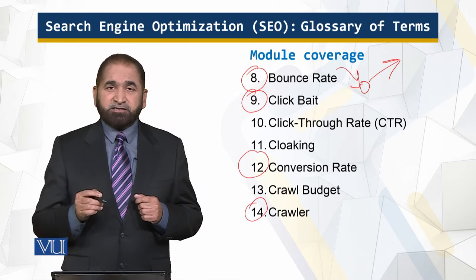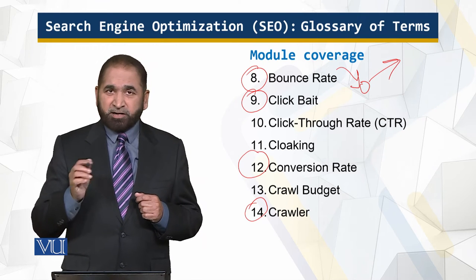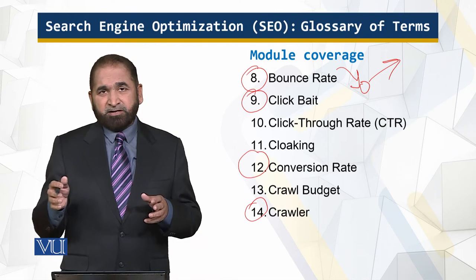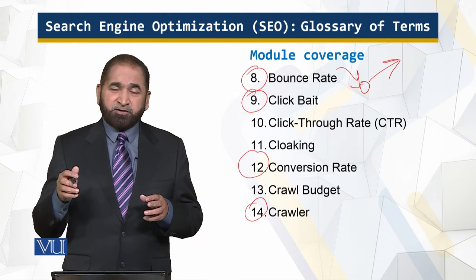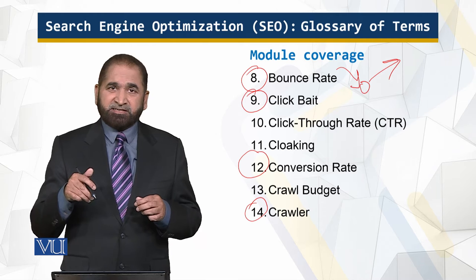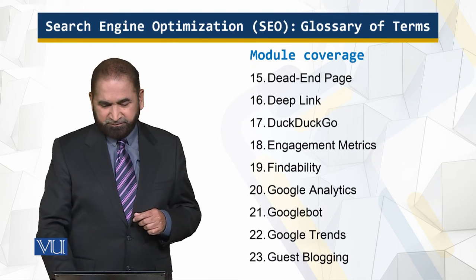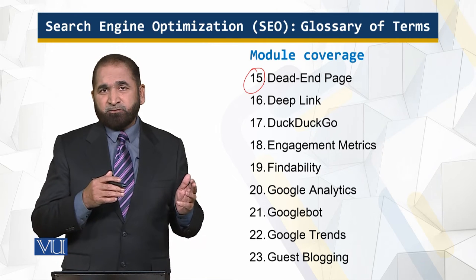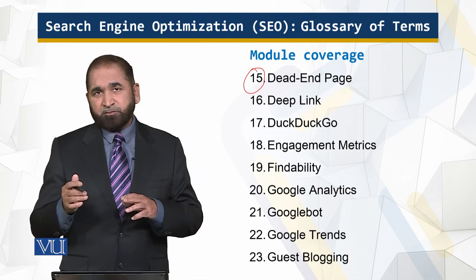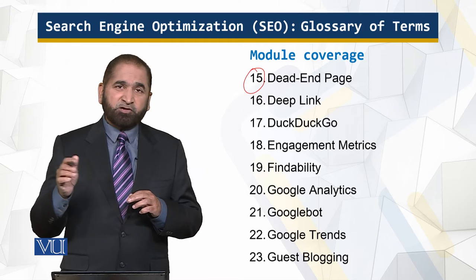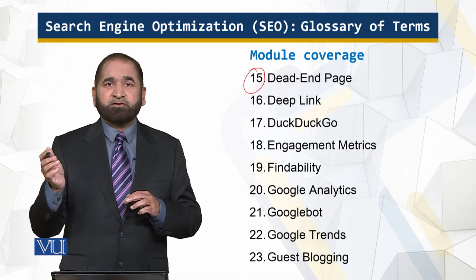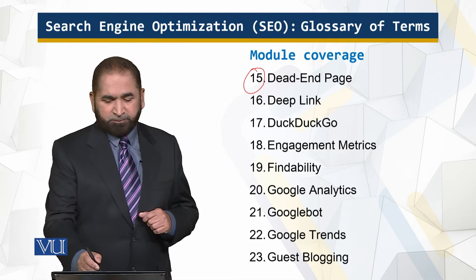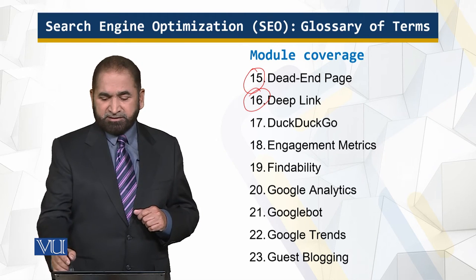A crawler is software which automatically moves over the web and your website, looking at information used to index the web and your web page. A dead end page is a page you can land on but from which there is no link going out anywhere.